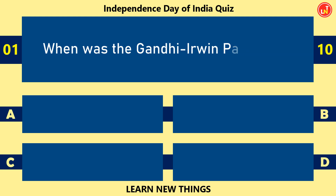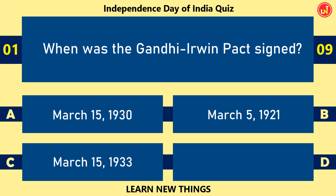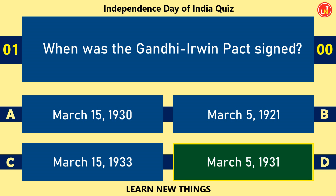When was the Gandhi-Irwin Pact signed? March 5, 1931.